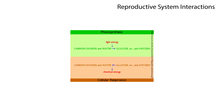Plant reproduction depends on the processes of photosynthesis and respiration. Energy in the form of sugar is produced through photosynthesis. That energy is metabolized during respiration in order to perform tasks such as growth and reproduction. So without successful photosynthesis and respiration processes, plant reproduction cannot occur.